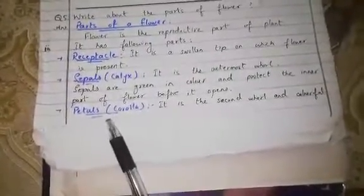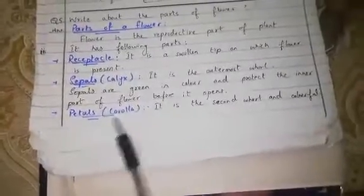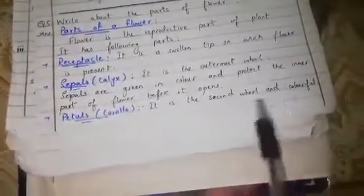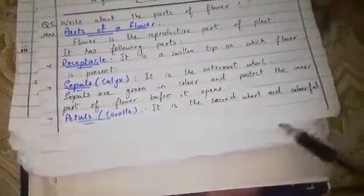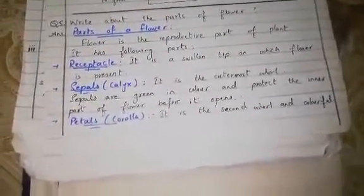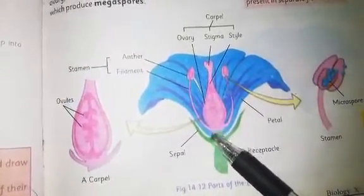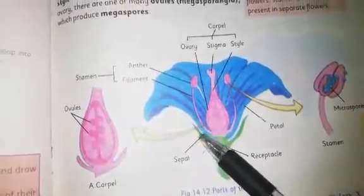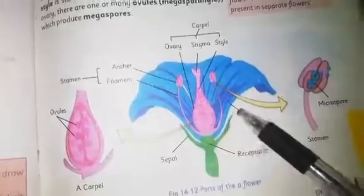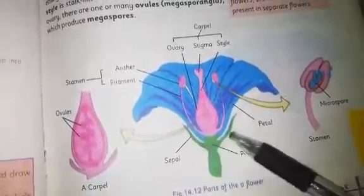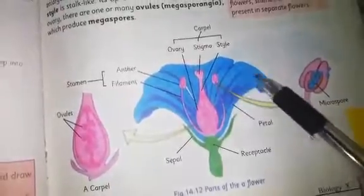The second whorl is the petals, also called the corolla. This is the second whorl and is colorful. This is the receptacle — the place where the flower is found. These are the sepals, and below them are some sepals that are down. This is the petal.